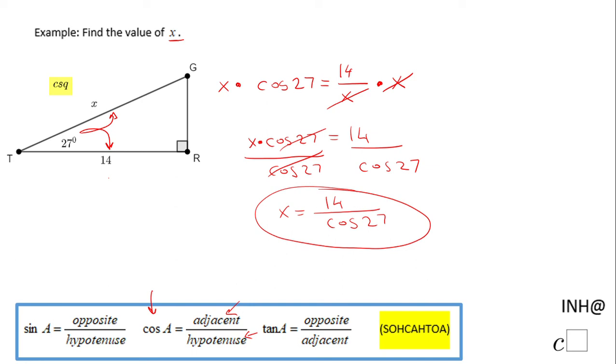You're gonna put it in the calculator and I have here as a value X equals 15.71, I rounded to the nearest hundredth. I'm gonna put that here, 15.71, and you notice this value is more than 14, so it is a reasonable answer.